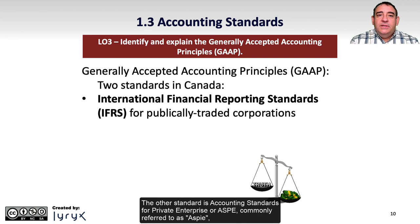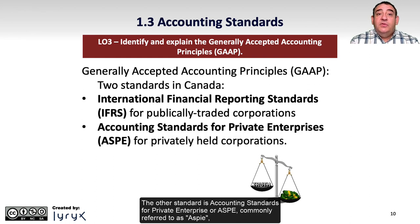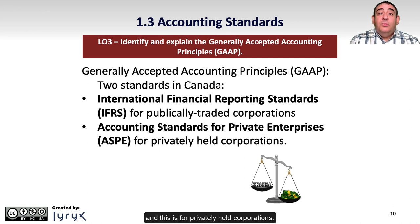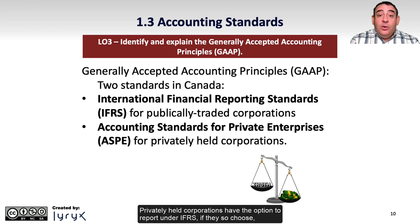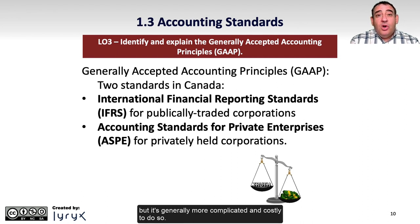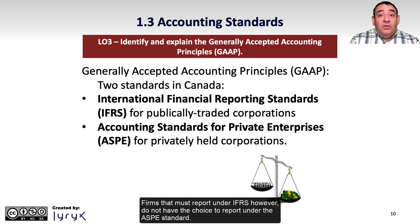The other standard is Accounting Standards for Private Enterprise, or ASPE, and this is for privately held corporations. Privately held corporations have the option to report under IFRS if they so choose, but it's generally more complicated and costly to do so. Firms that must report under IFRS, however, do not have the choice to report under the ASPE standard.